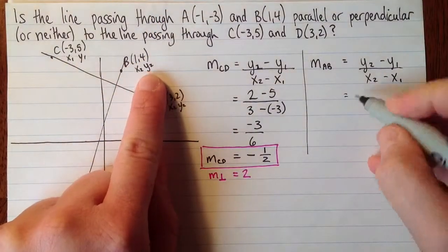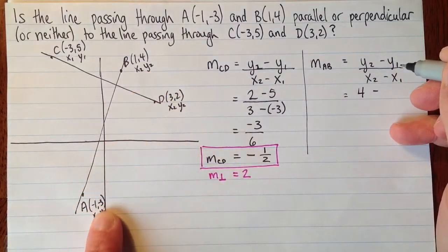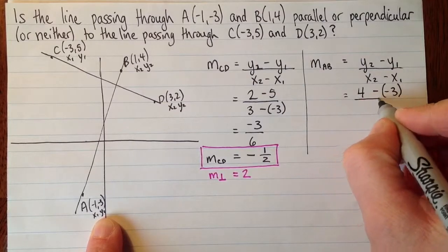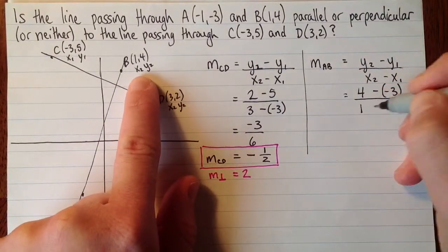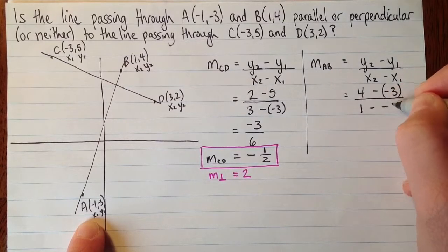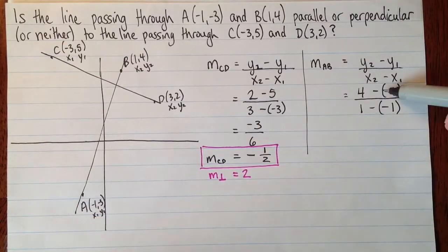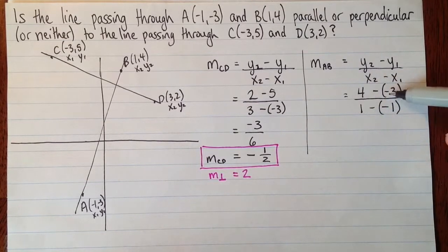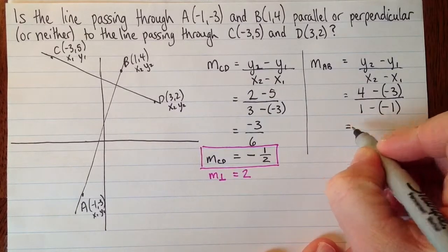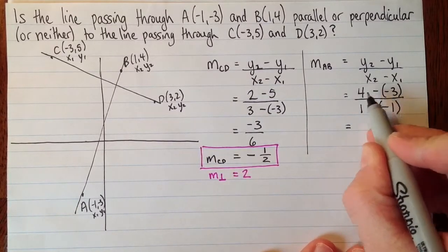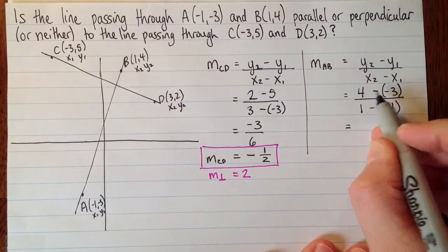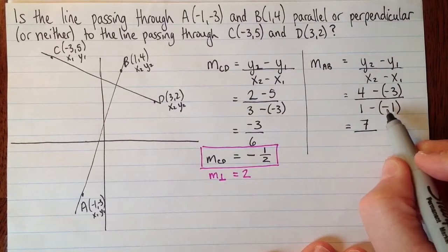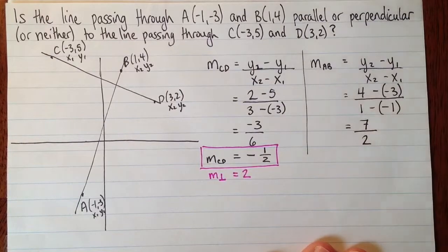Okay, y2 here. 4 minus y1 is -3. I've got to be real careful with those signs. x2 is 1. x1 is -1. So here's an example of where it's super easy to make a mistake when you're figuring this line out here. So watch that you put all the right negative signs in, and then watch that you calculate really carefully. So 4 minus -3, that's 4 plus 3. So that's 7. And then 1 minus -1, that's 1 plus 1. So that's 2.